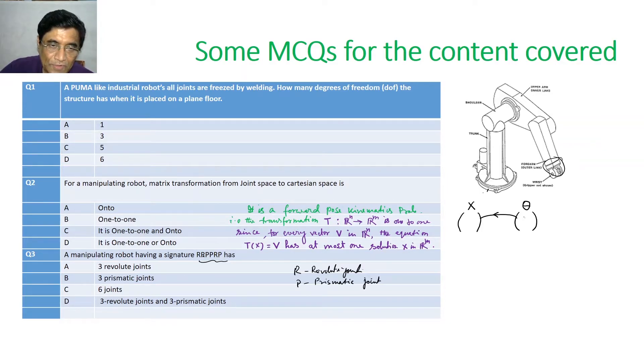Very easy. So, one to three R, three revolute joints. So, answer is three revolute joints or three prismatic joints, six joints, three revolute joints and three prismatic joints. Definitely, this is correct. Three revolute joints as this is a manipulator's signature and three prismatic joints. That's the correct answer.